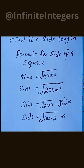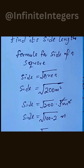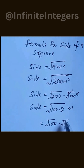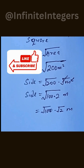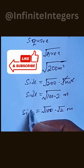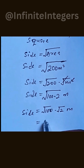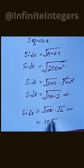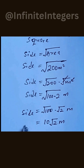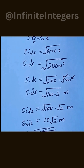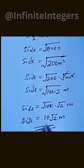We have the square root of 100 multiplied by the square root of 2, with the meter unit. The square root of 100 is 10, so the side equals 10 square root of 2 meters. That is the answer — one side of the garden is 10√2 meters.